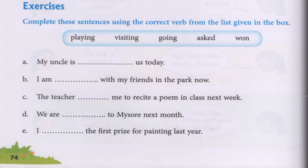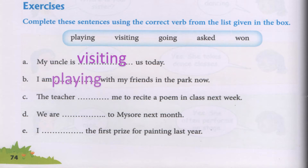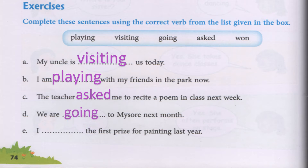Complete these sentences using the correct verb from the list given in the box. A. My uncle is visiting us today. B. I am playing with my friends in the park now. C. The teacher asked me to recite a poem in class next week. D. We are going to Mysore next month. E. I won the first prize for painting last year.